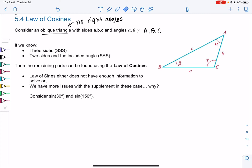We're going to use Law of Cosines in these two cases. If we know all three sides, we call that side-side-side (SSS).